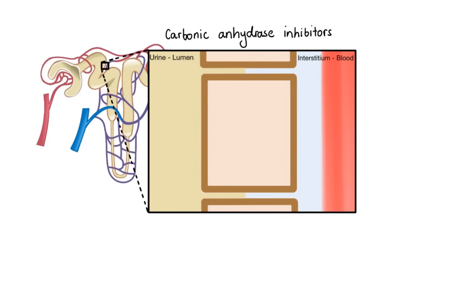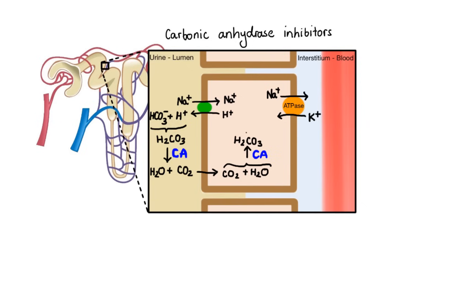Here bicarbonate reabsorption is initiated by the action of sodium-hydrogen ion exchanger, which allows sodium to enter the cell in exchange for hydrogen ion. Next reabsorbed sodium is pumped by sodium-potassium ATPase out of the cell, while the secreted hydrogen ion combines with the luminal bicarbonate ion to form carbonic acid. Carbonic acid is then rapidly dehydrated to carbon dioxide and water by an enzyme carbonic anhydrase. Carbon dioxide enters the epithelial cell by simple diffusion and gets rehydrated back to carbonic acid by intracellular carbonic anhydrase. Finally, intracellular carbonic acid dissociates to form hydrogen ion, which can be transported by sodium-hydrogen exchanger to the lumen, and bicarbonate ion, which is transported out of the cell.